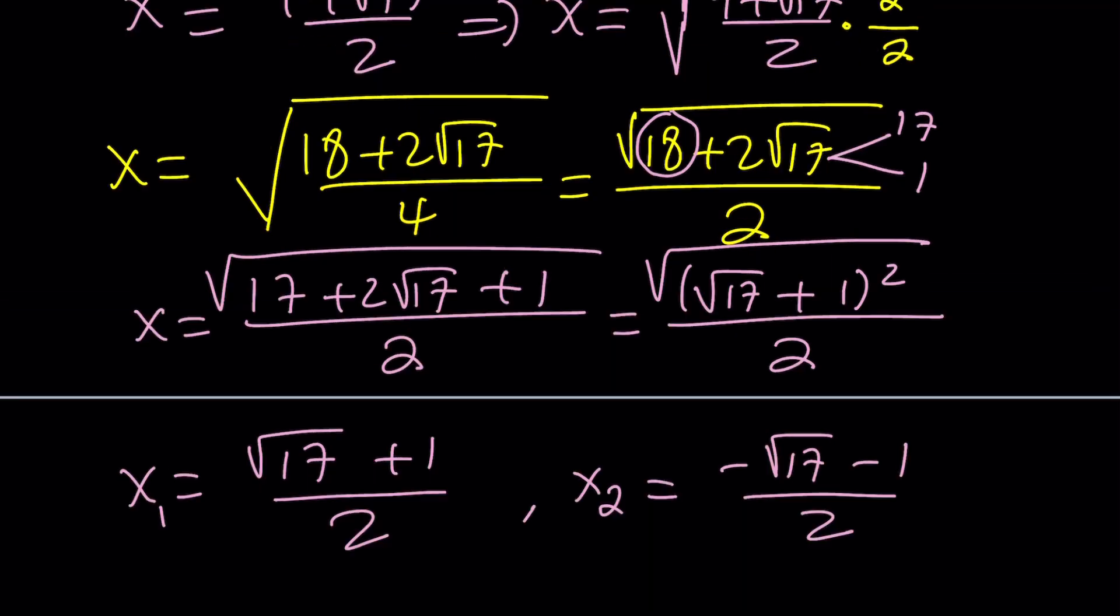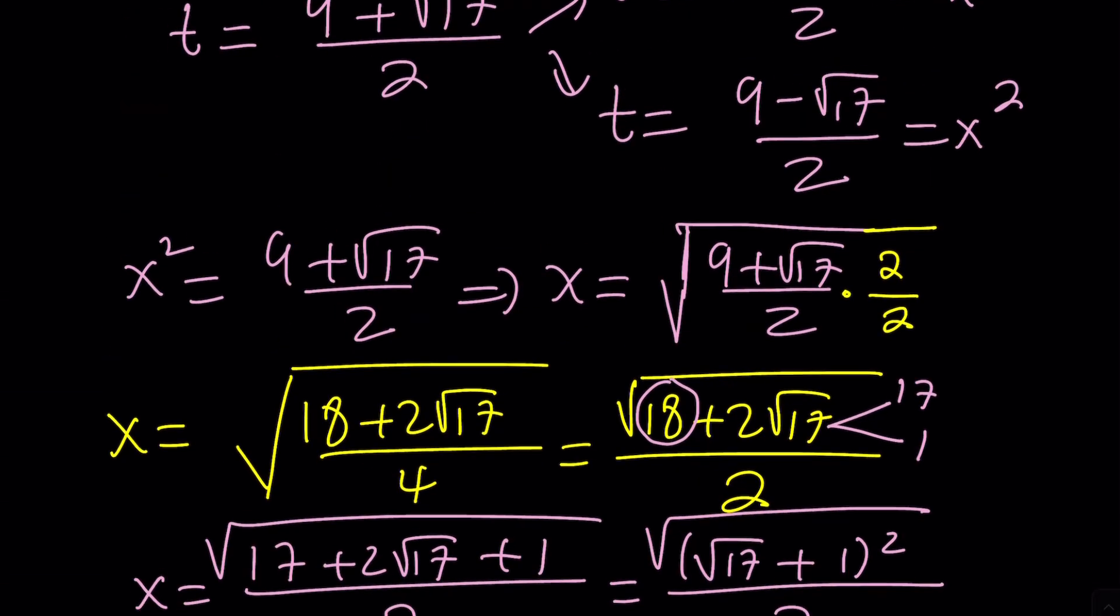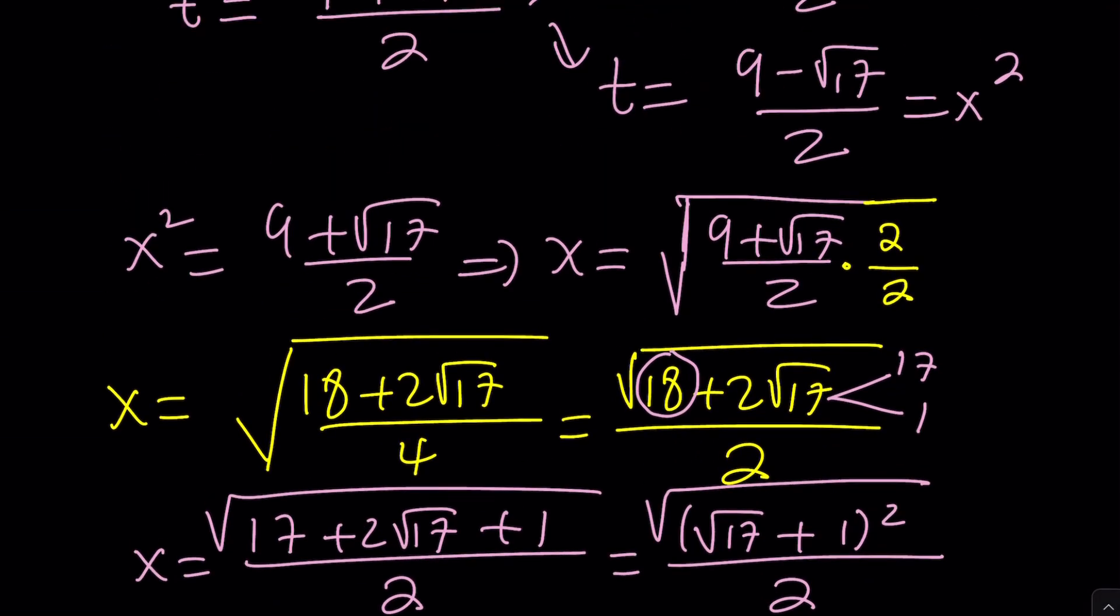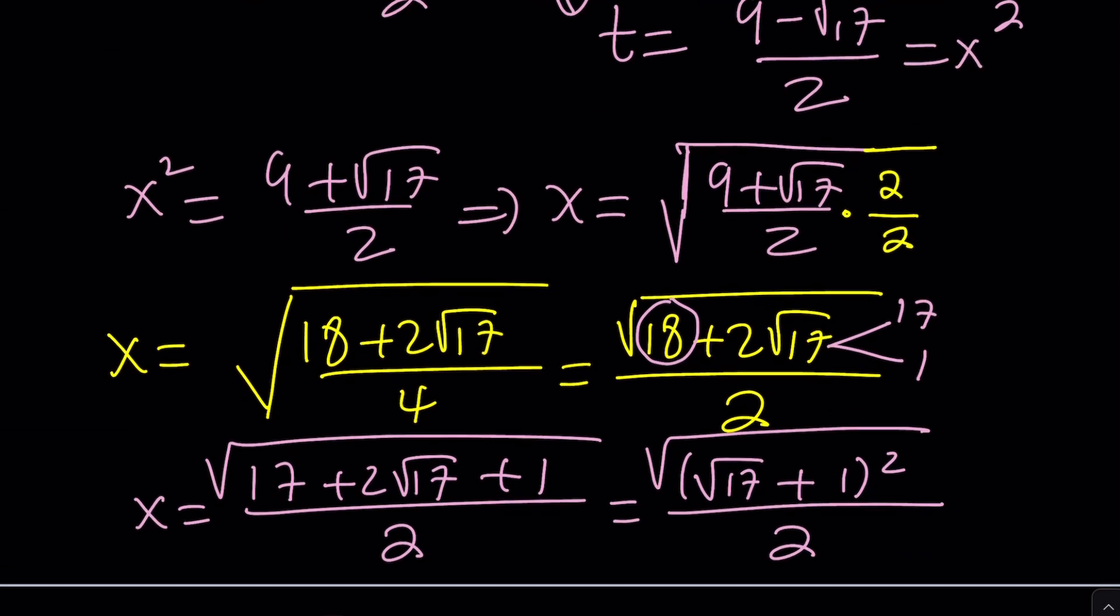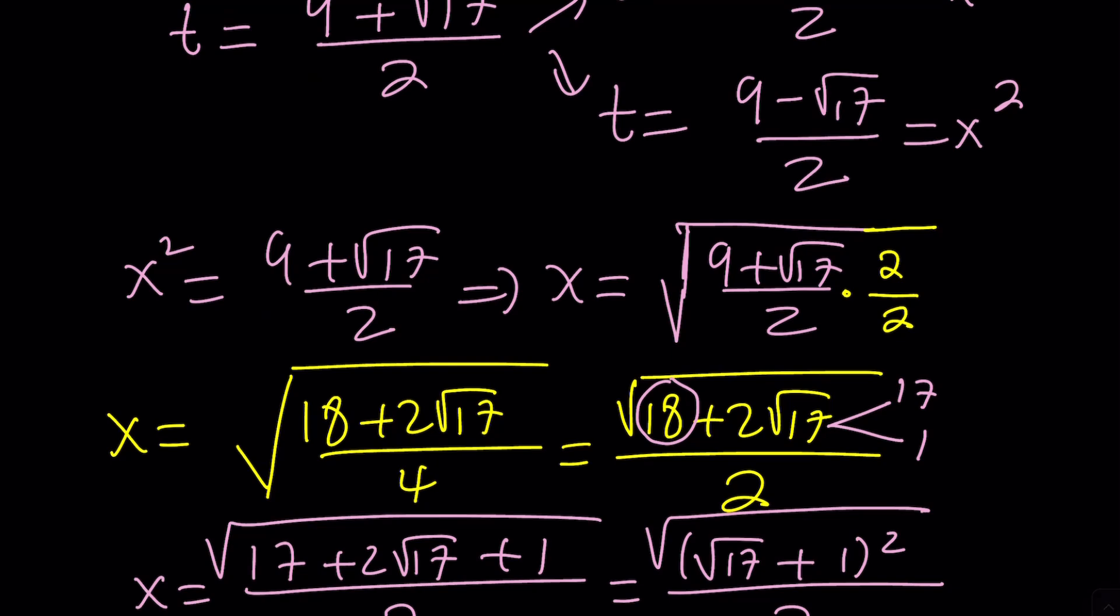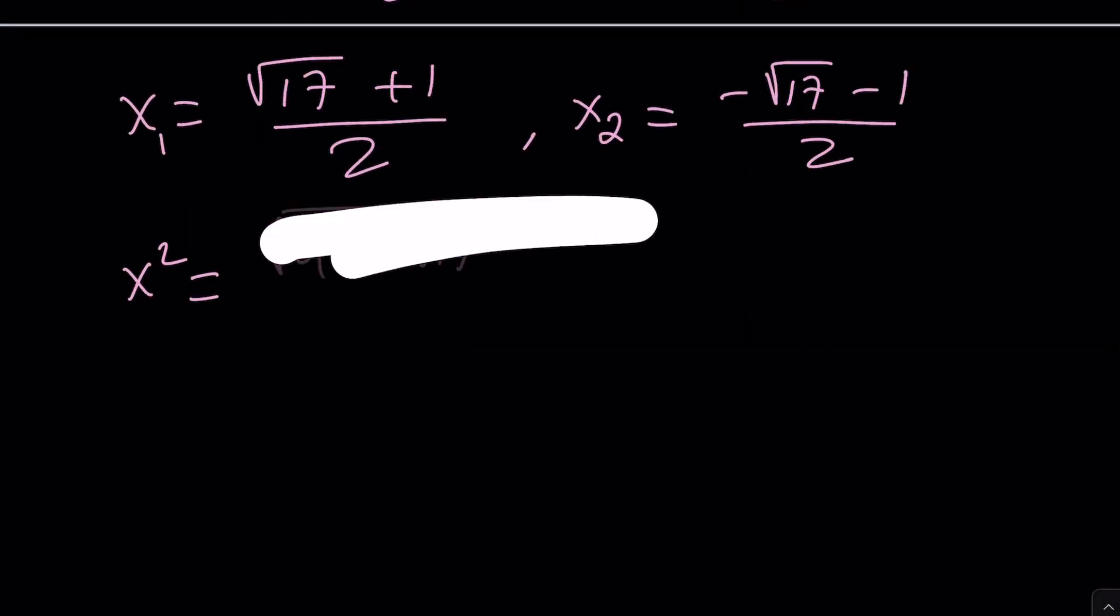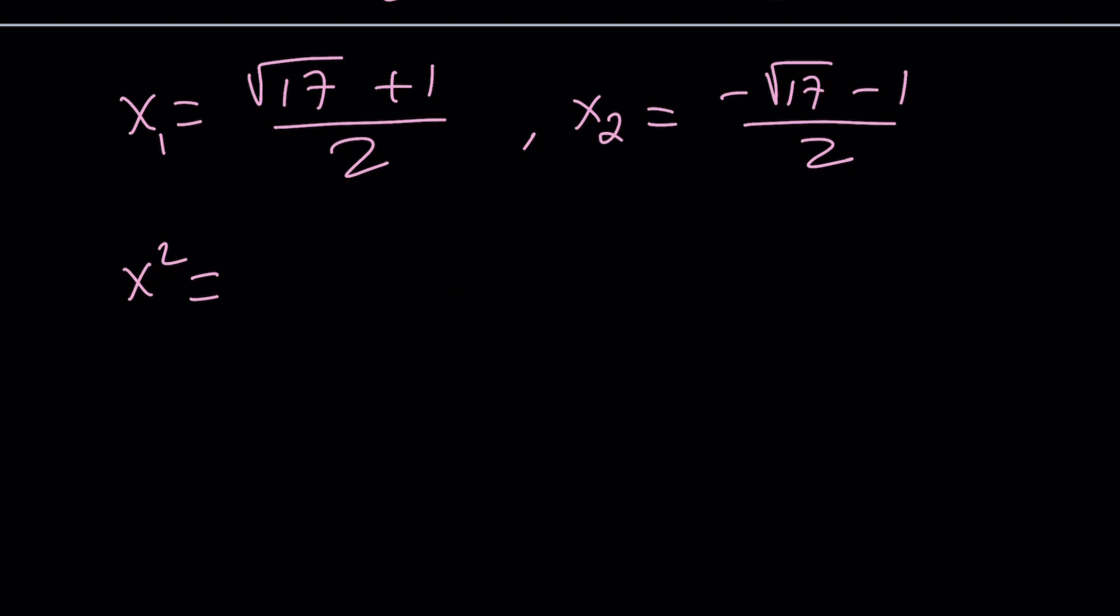And then if you do the same thing, exact same thing for the 9 minus root 17, you're going to get x squared equals the square root of 9 minus root 17 over 2. So, the square root of 9 minus root 17 over 2. And then, from here,